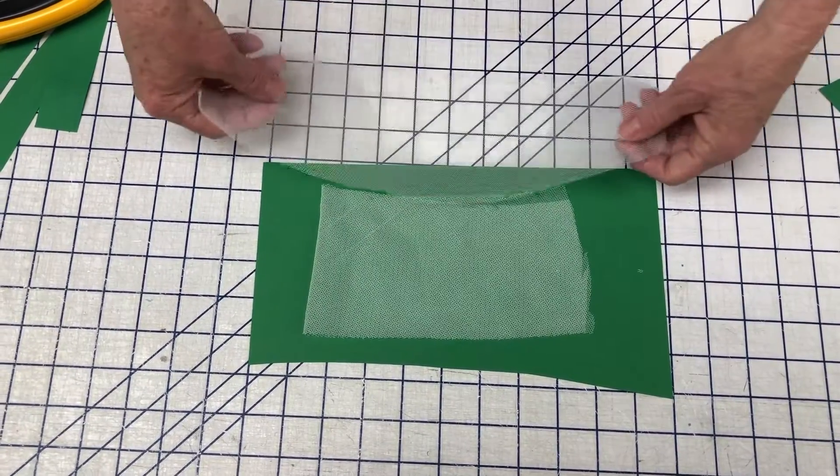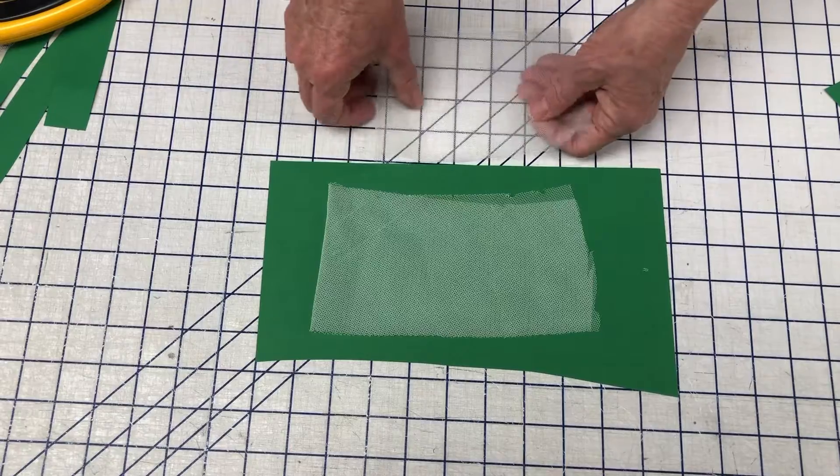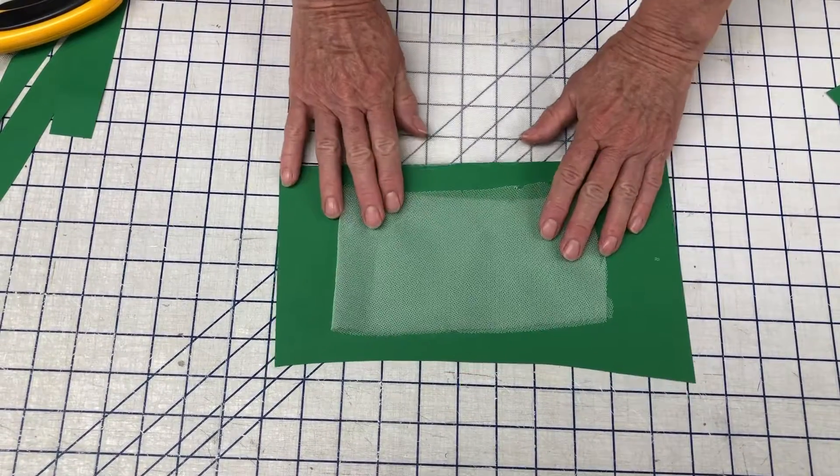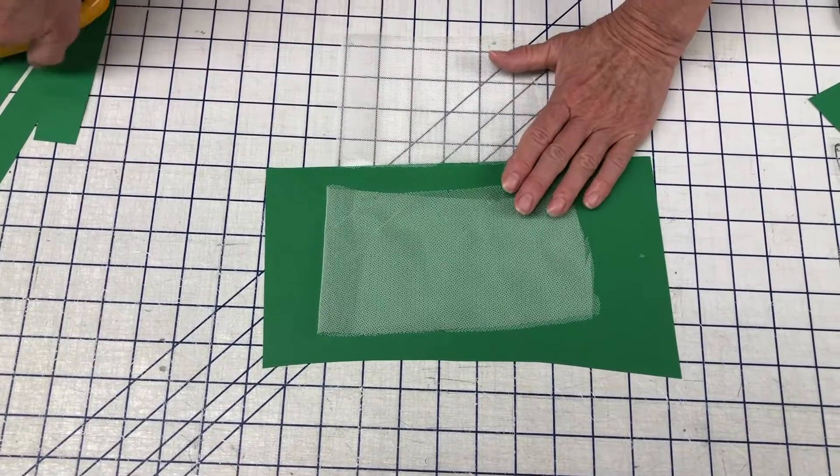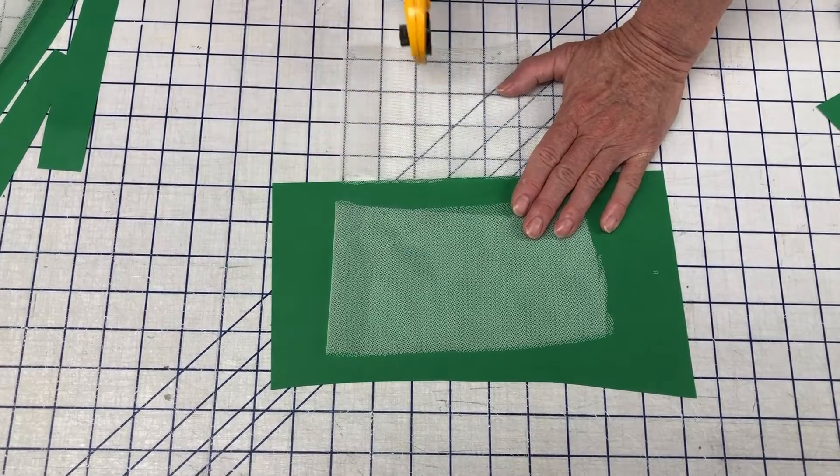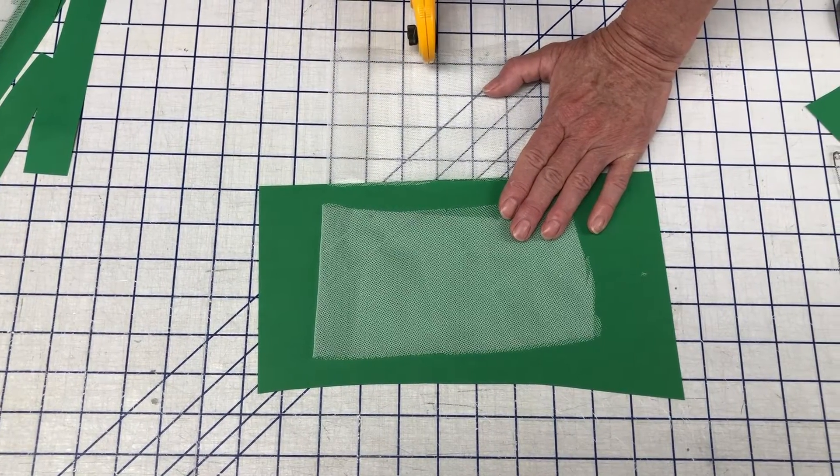I have another piece of tulle here and I'm going to fold it. So I have two layers here and two layers here, and I'm going to illustrate another reason why I have this paper under here and why I get such a clean cut with my rotary cutter.